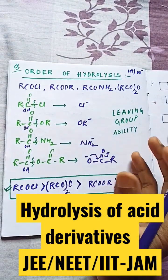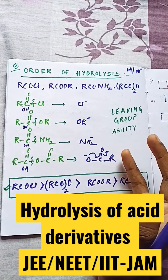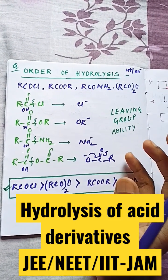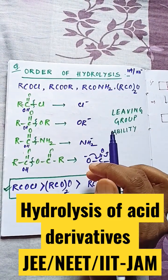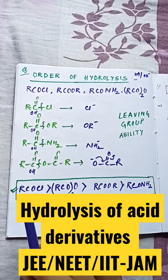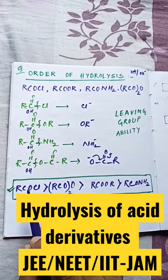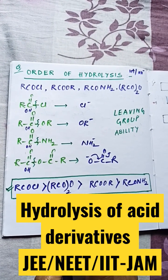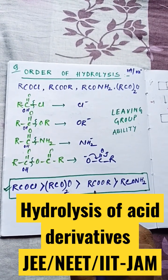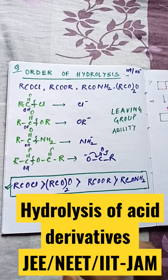Oxygen has better capability because it is highly electronegative compared to nitrogen. So the order of hydrolysis will be: acyl chloride (RCOCl) > acid anhydride > ester > amide. I hope you understood, thank you.